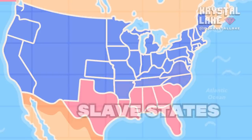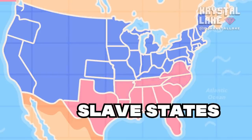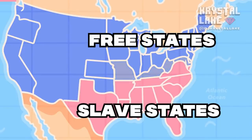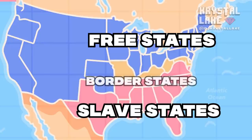On one side you had the Confederate states in the south, which were the slave states. On the other hand you had the Union states in the north, which were the free states. Then you had the border states, which were slave states that still wanted to be part of the Union. One misconception is that the Emancipation Proclamation freed all the slaves — and that isn't true.